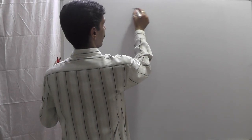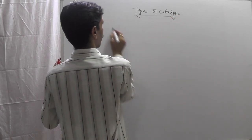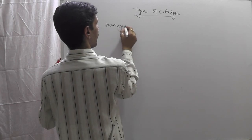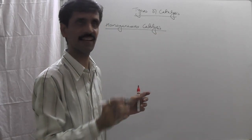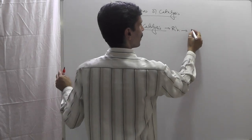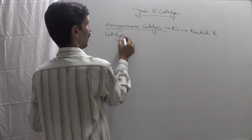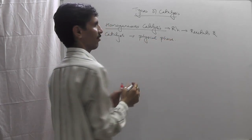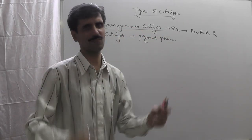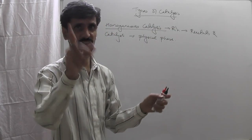We move on to the types of catalysis, which is basically related to the physical state. The very first type is called homogeneous catalysis. It is a reaction in which the reactants and the catalyst are in the same physical phase or physical state. 'Homo' means same and 'genus' means phase, so the reactant as well as the catalyst are going to be in the same physical phase.